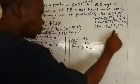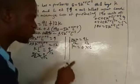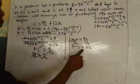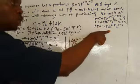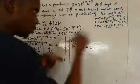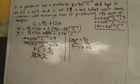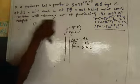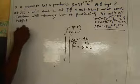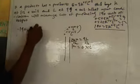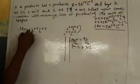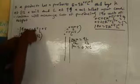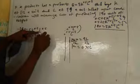Substituting K = 0.75L back into the third equation — which is 190 = 5K^0.5 L^0.5 — we replace K with 0.75L: 190 = 5(0.75L)^0.5 L^0.5. Now divide both sides by 5, giving 38 = (0.75L)^0.5 × L^0.5.